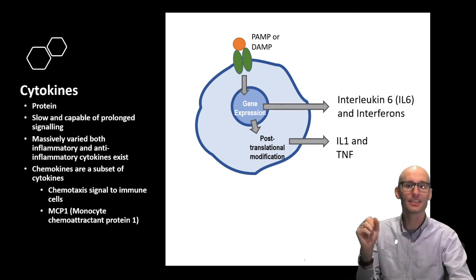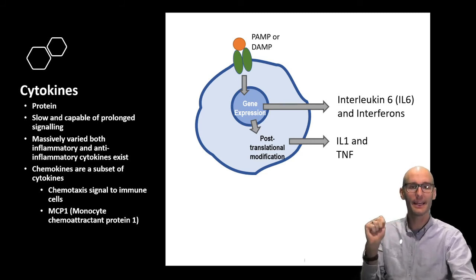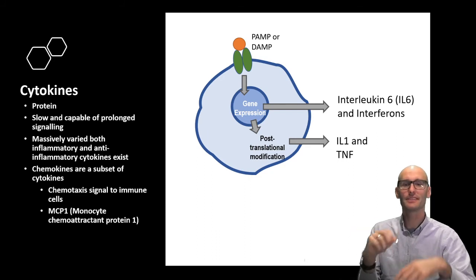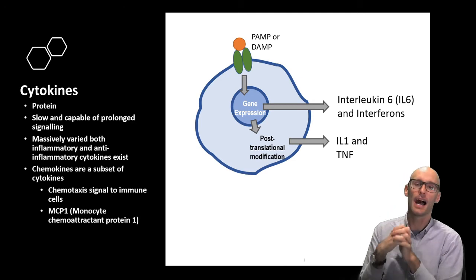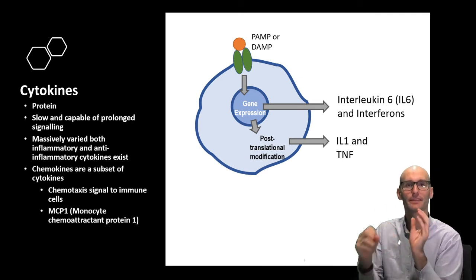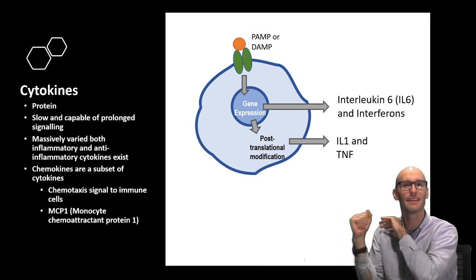Remember, the innate immune system is like a tank. It uses crude mechanisms that cause damage to the pathogens and damage to us. Another example is interleukin-6, IL-6, and interferons. These are protein inflammatory signaling molecules, cytokines, and these don't have those checkpoints. These just need to be expressed and then they'll automatically release.